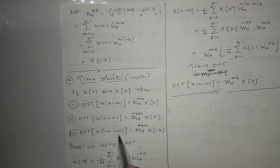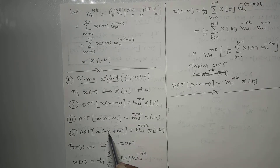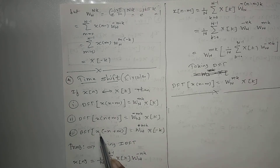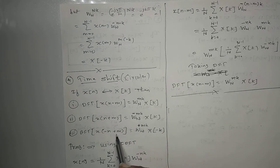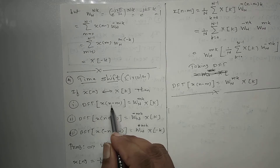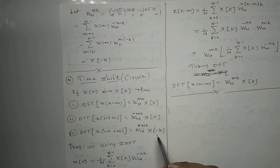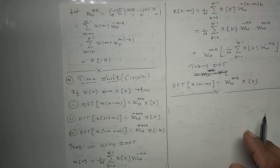Then the DFT of x[-n+m]: if we take minus outside from the argument, n minus m remains inside. x[-n] ka DFT is X[-k], so DFT of x[-n+m] is WN raised to plus mk into X[-k]. The way to remember: minus n is taken outside, bracket mein n minus m rahega, so its DFT contributes WN raised to mk into X[k], but with the minus sign outside, dft of x[-n] gives X[-k].